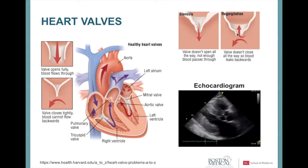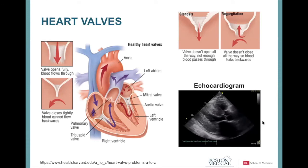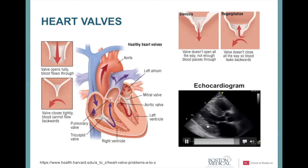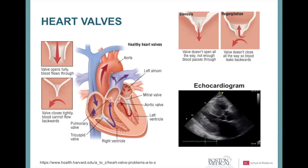Valves can also be regurgitant — meaning they don't close adequately and blood flows backwards into the chamber it came from, which also leads to problems. Echocardiography is the primary way we assess heart valve function. This echocardiogram example shows the mitral valve and aortic valve of the left ventricle in a patient who happens to have amyloidosis.